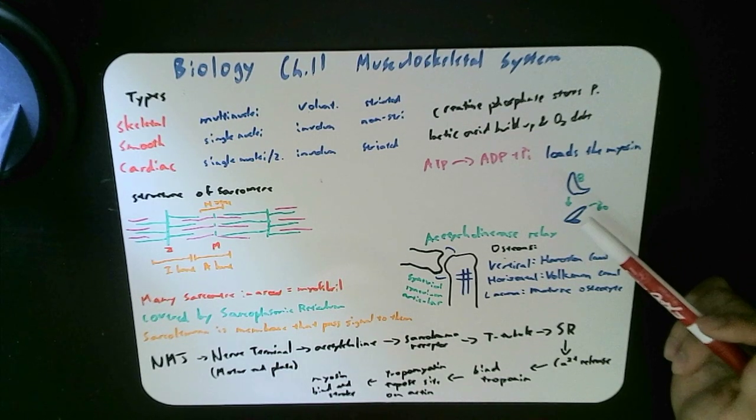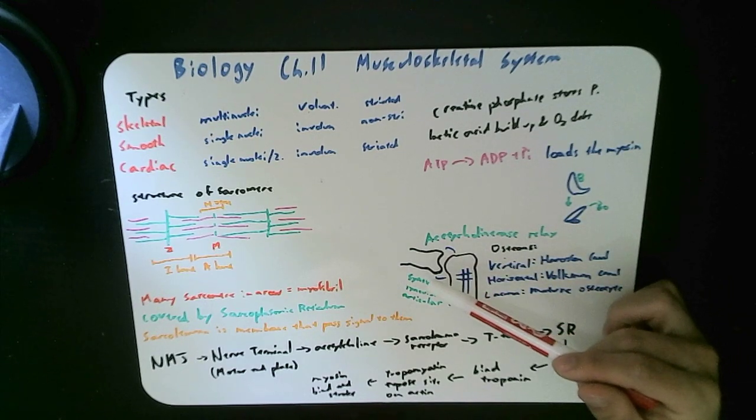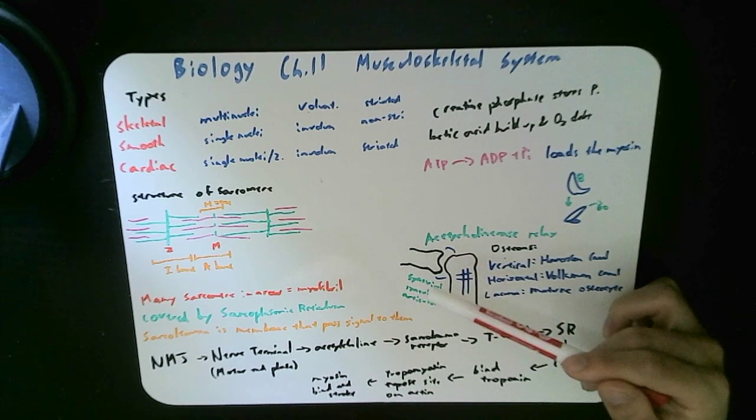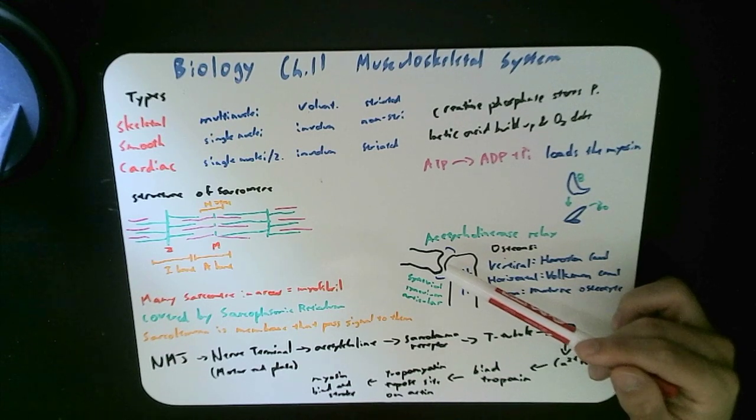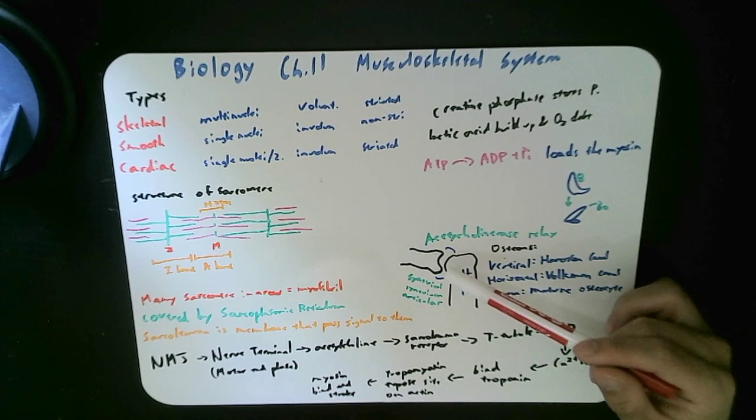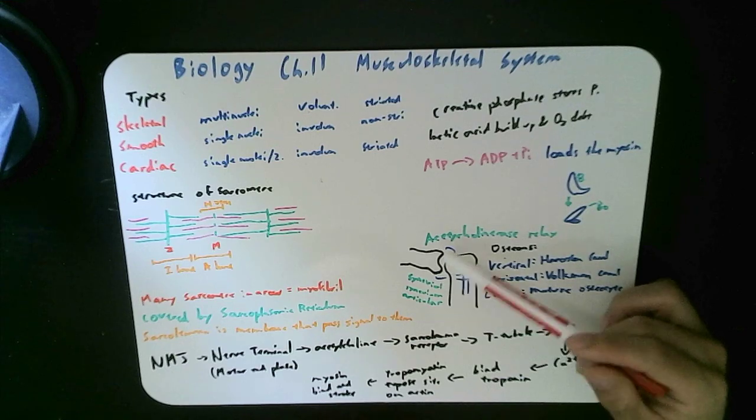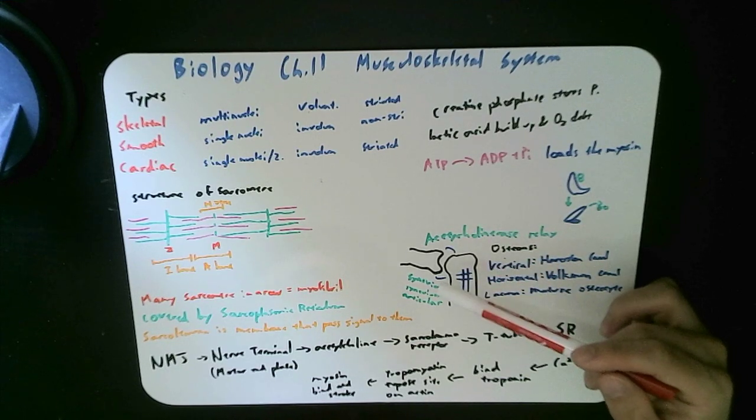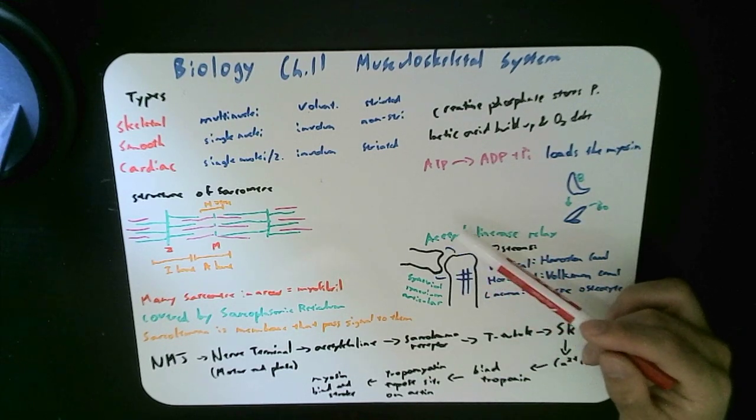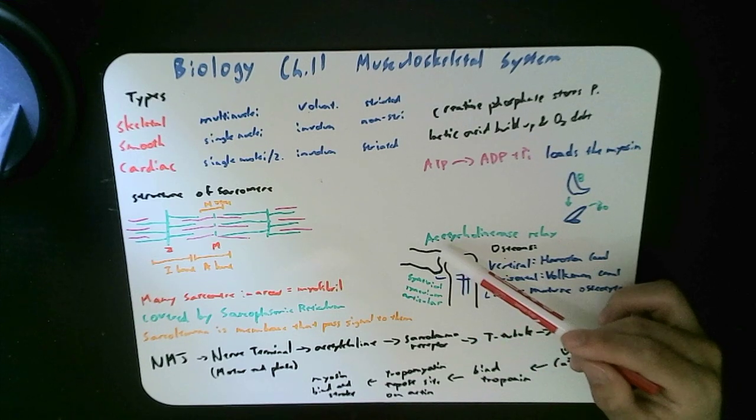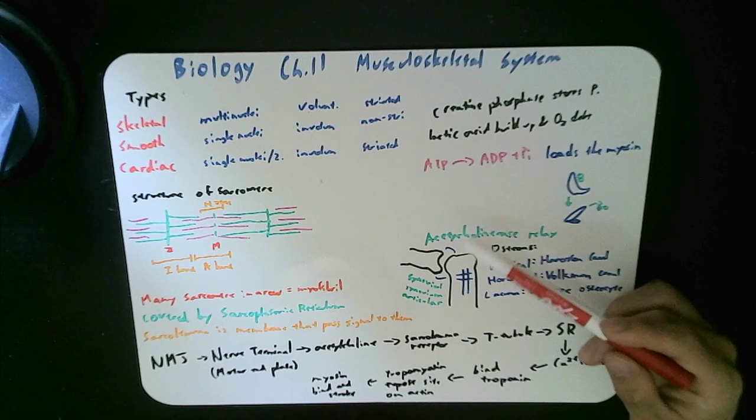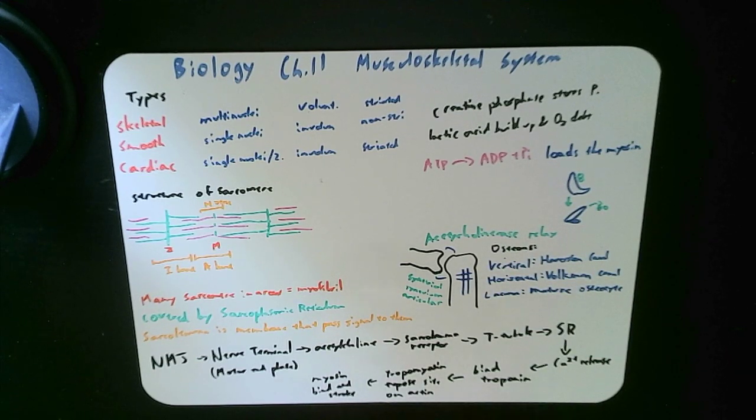For the joints, we have the synovial membrane layer, and then it moves on to the synovium, which actually releases the lubricating synovial fluid to help lubricate the joints, and then the articular membrane actually protects the ridge, prevents rubbing against each other, and only touches those parts. That's pretty much it for your musculoskeletal system.